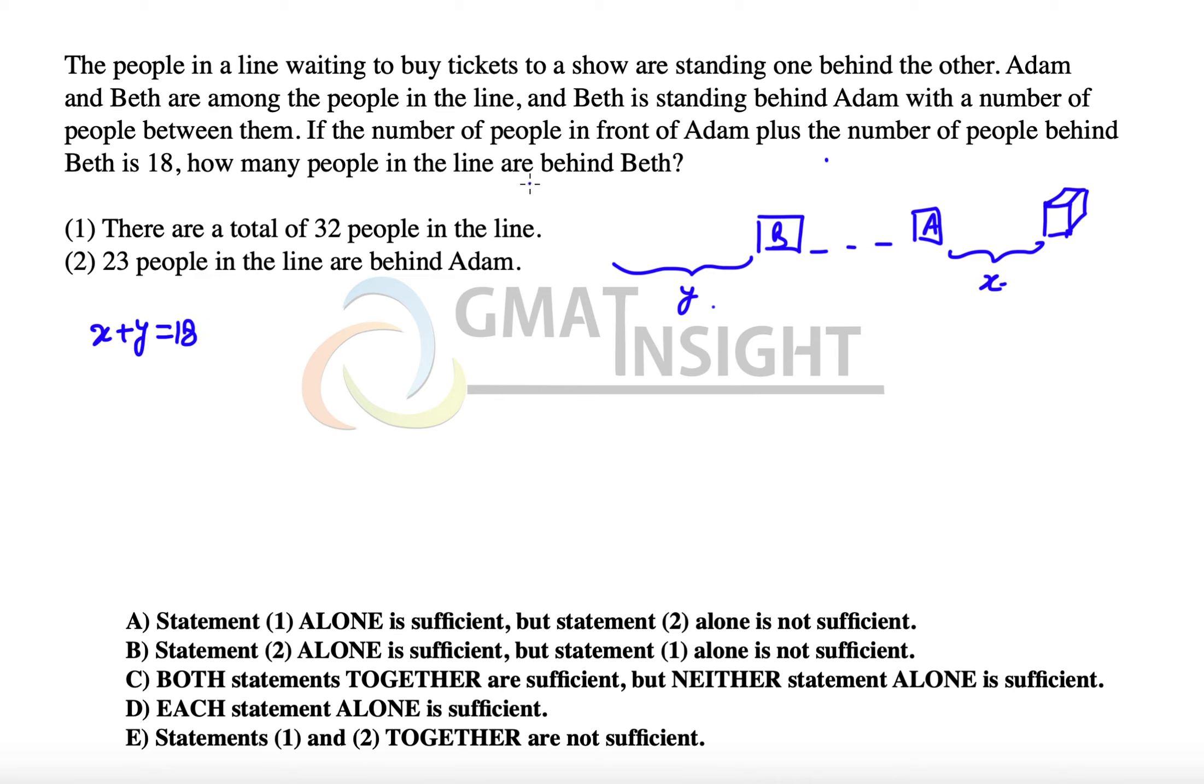How many people in the line are behind Beth? So we need to find out the value of y. Now let's also assume that the number of people between A and B is z and start seeing the statements.